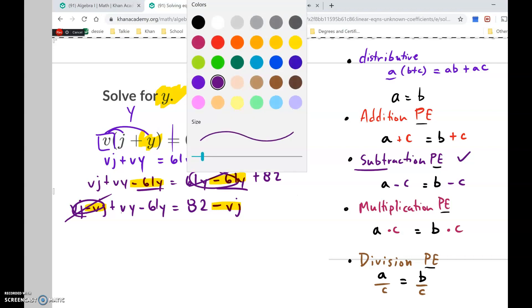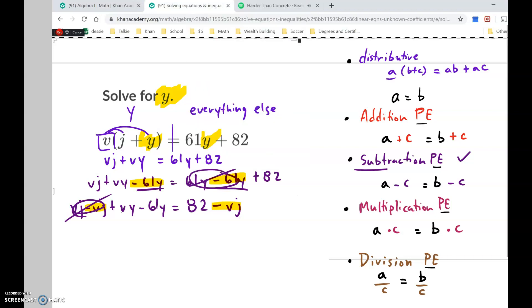And now we're left with vy, positive vy minus 61y equals 82 minus vj. And here's where this can be kind of tricky. We're going to undistribute. So this is what we have right now with the y's. We want to make two things like these a's. We had two a's. We want to make those two a's be one a. So we're going to work backwards here and we're going to undistribute. So we're going to undistribute these y's by pulling them out. And in parenthesis, we have left over this v minus 61. So that's undistributing. And we have 82 minus vj.